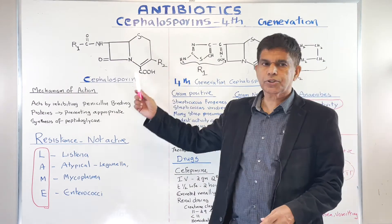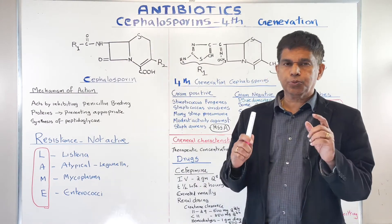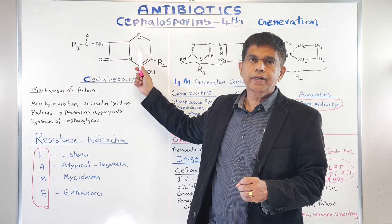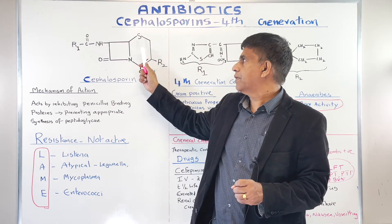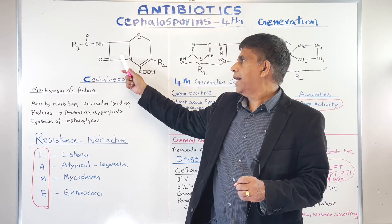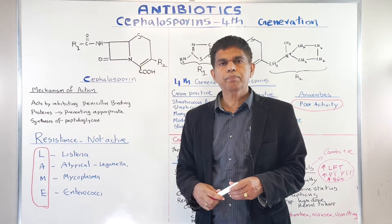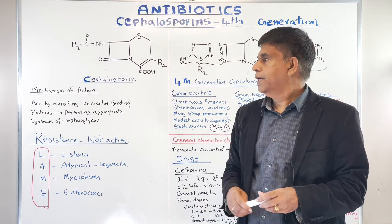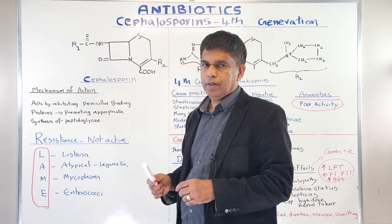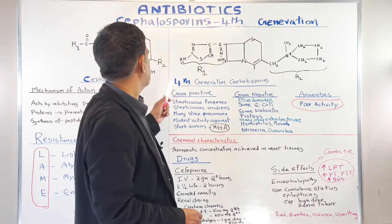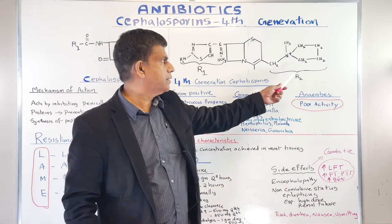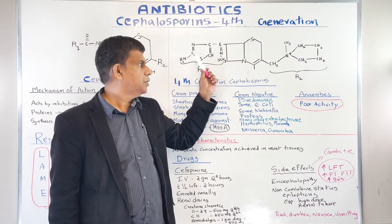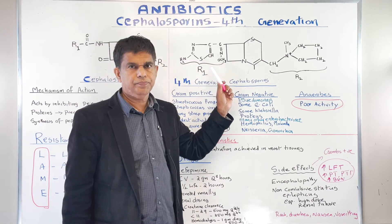Now let's look at the structure. When you look at the cephalosporin structure, we have two rings: a dihydrothiazene ring and a beta-lactam ring. Those are the two important rings in cephalosporin. In the fourth generation, what happens is you look at R1 and R2 — they make modifications to create a new drug.